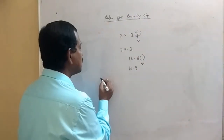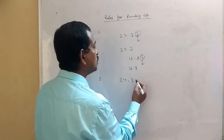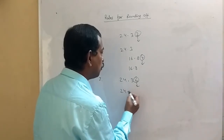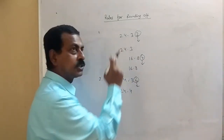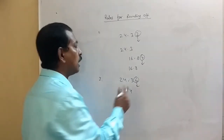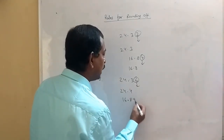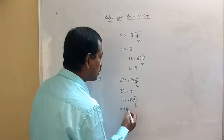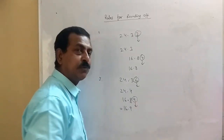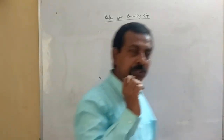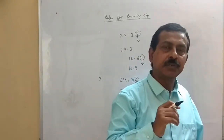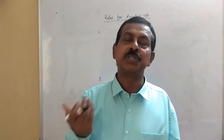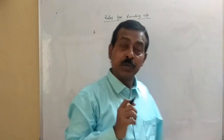The second rule: if the digit to be dropped is more than 5, then we increase the preceding digit by 1. For example, if it is 24.36 and you want to drop the 6, it becomes 24.4 because 3 is increased by 1. Or if it is 16.89 and you want to drop the 9, it becomes 16.9, since 8 is increased by 1.